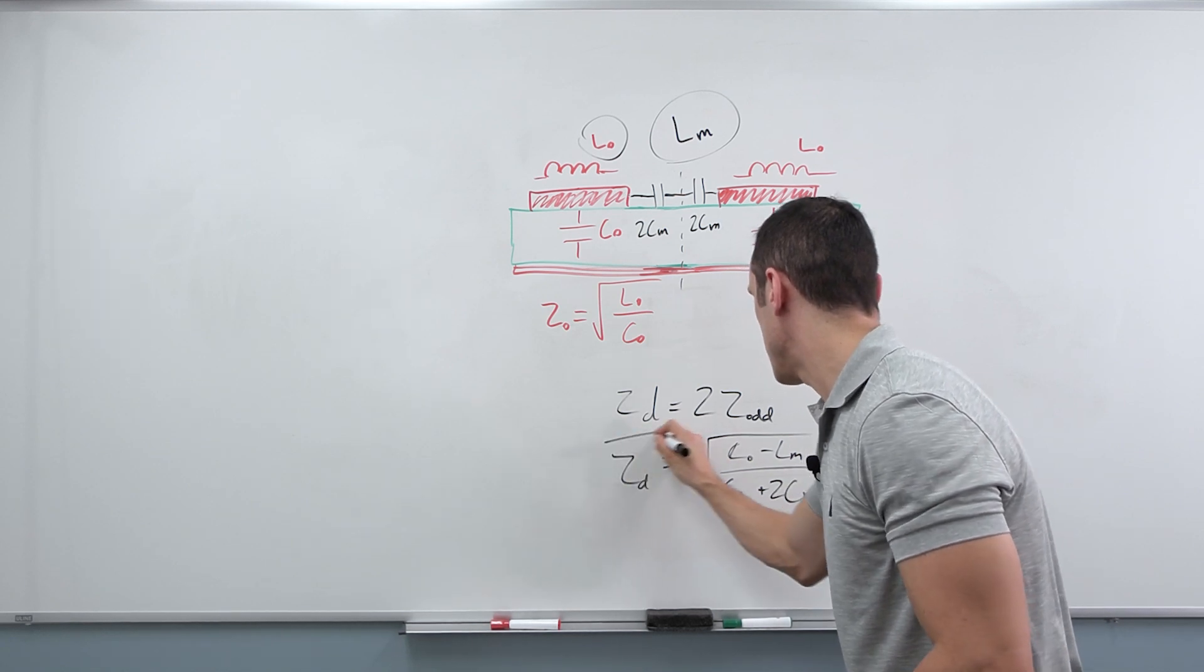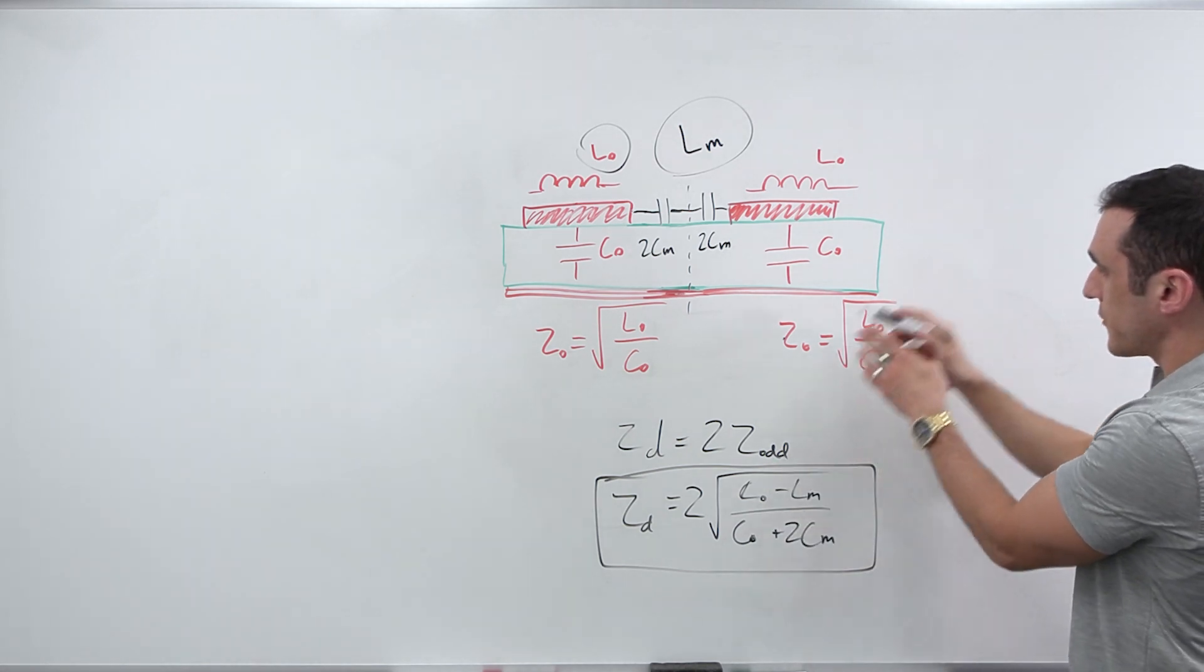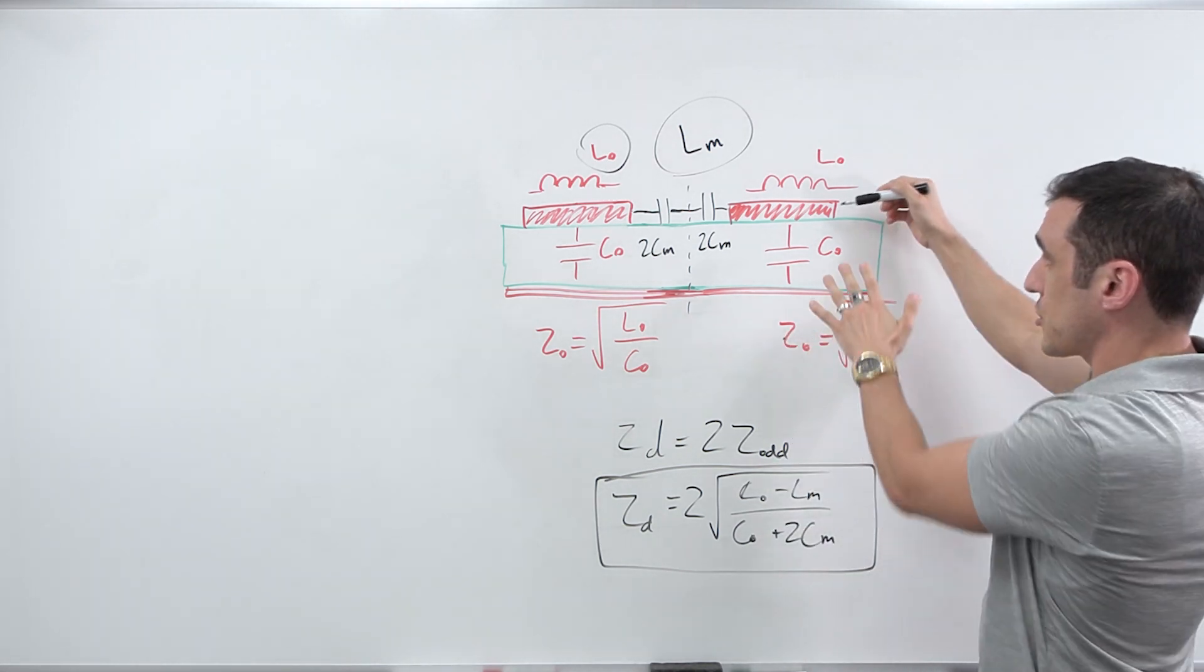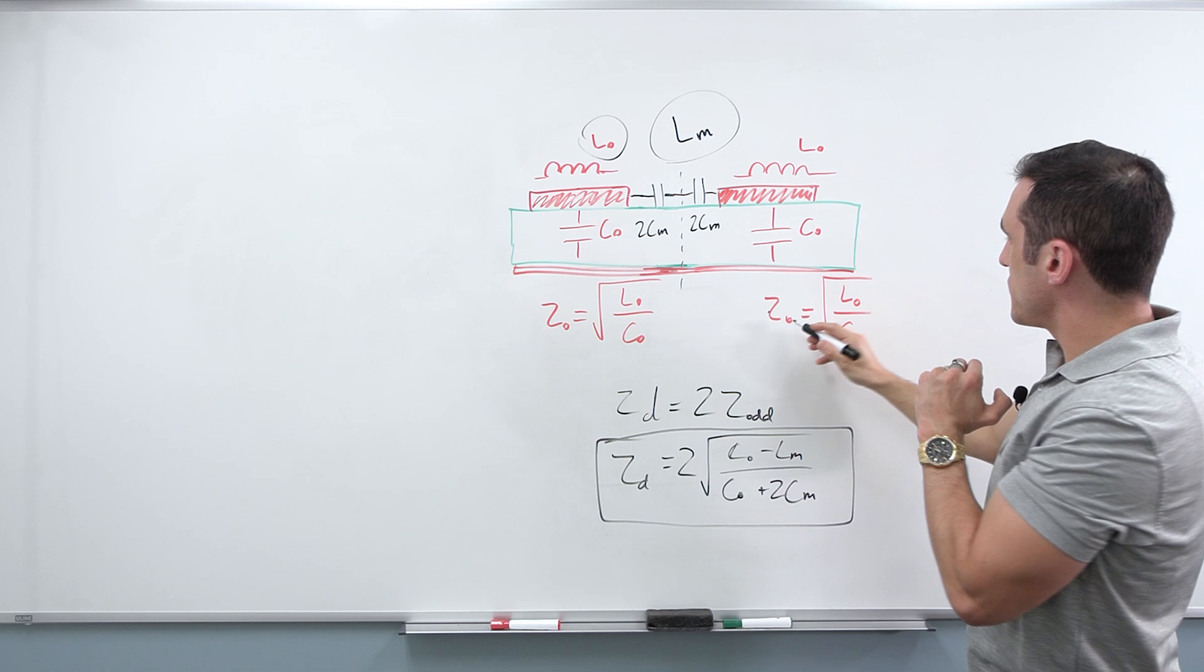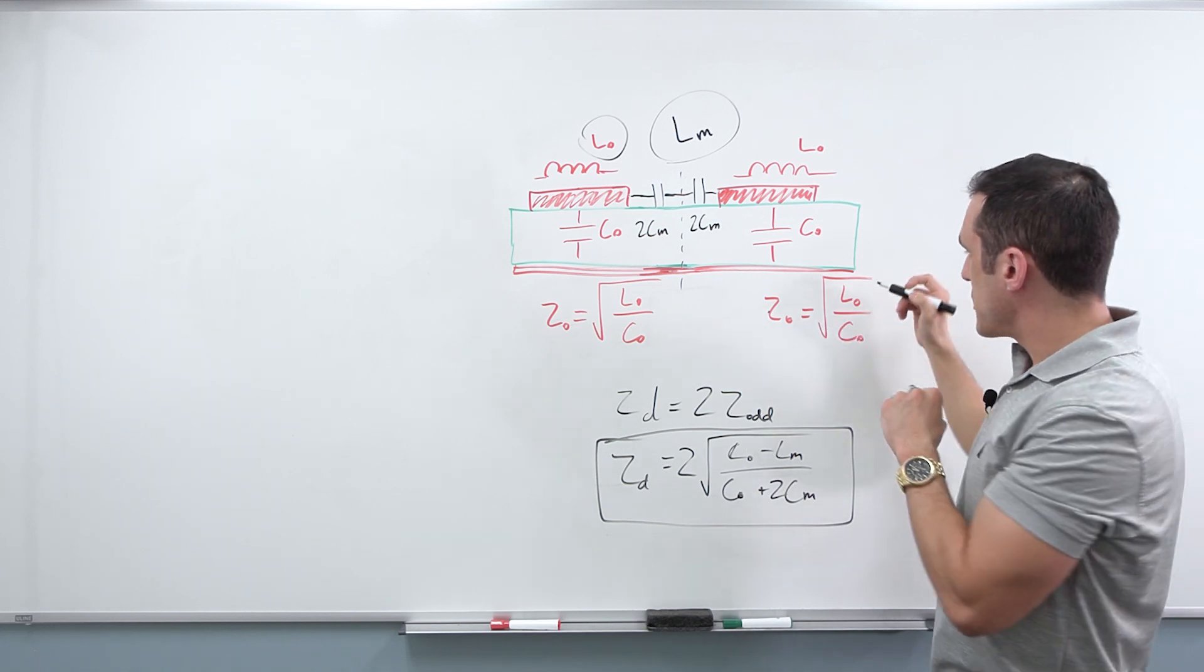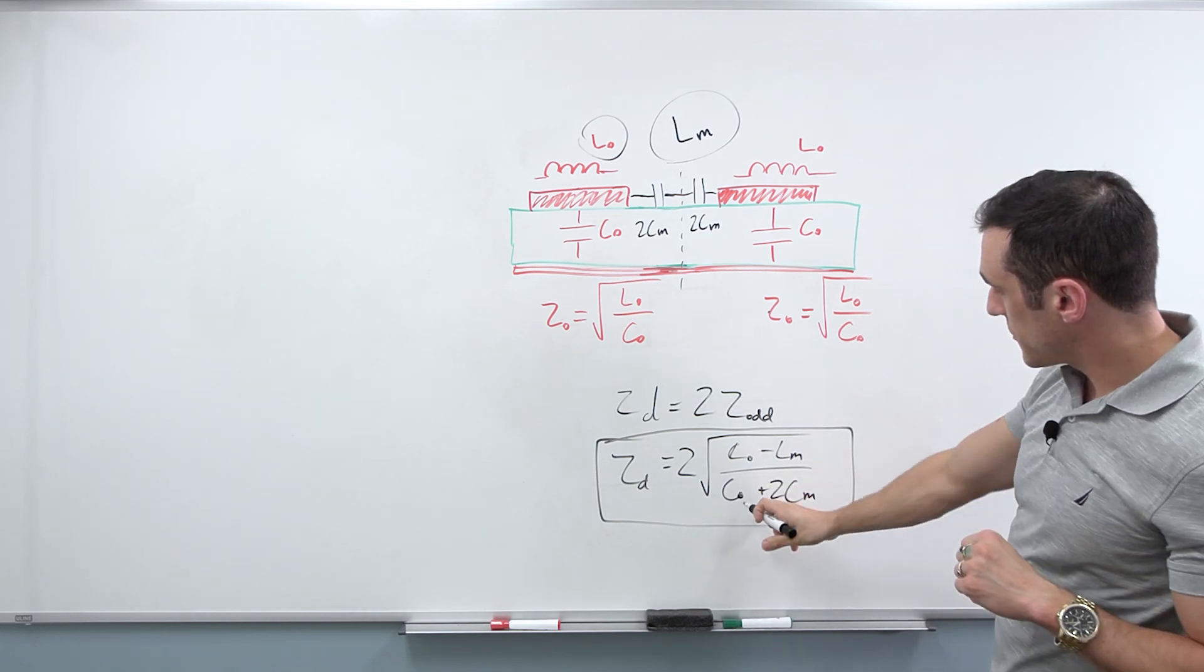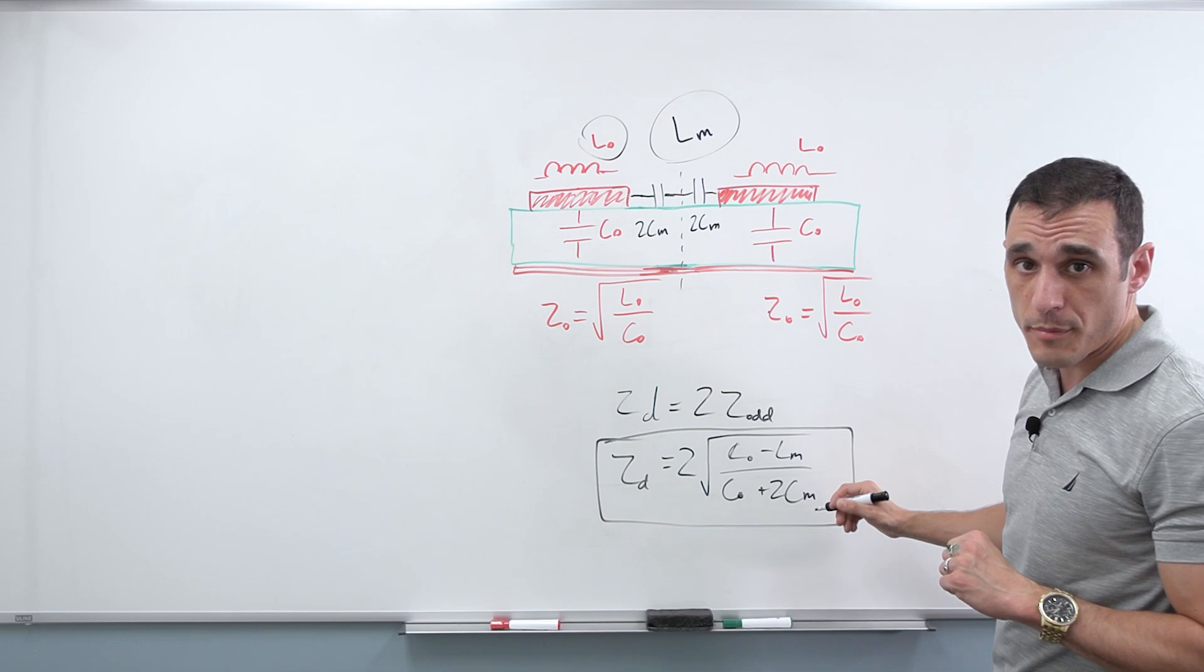It's going to be two times square root of L sub zero minus L sub M divided by C sub zero plus two C sub M. And that's my differential impedance. Remember L sub zero and C sub zero defined for an individual trace taken in isolation, meaning just the trace and just the ground plane. We're not worried about any other nearby conductors here. If I know Z sub zero and I know L sub zero and C sub zero, I can just plug the L sub zero C sub zero in here. And then I just need to know the mutual inductance and the mutual capacitance.